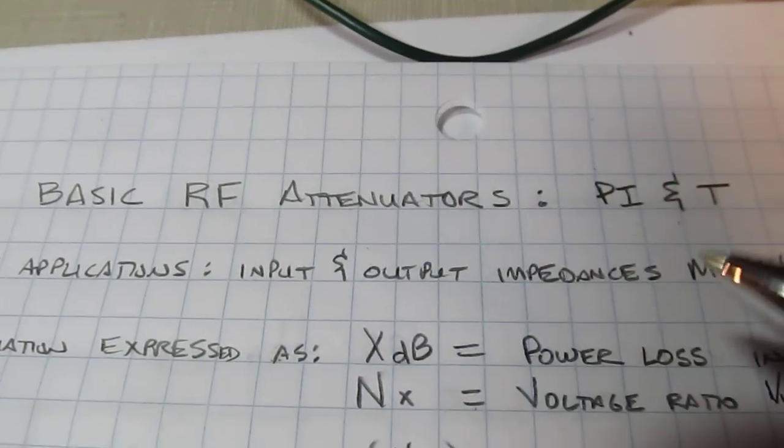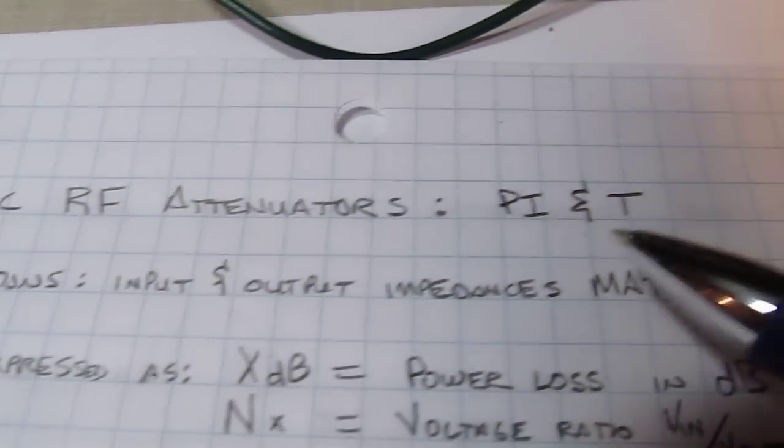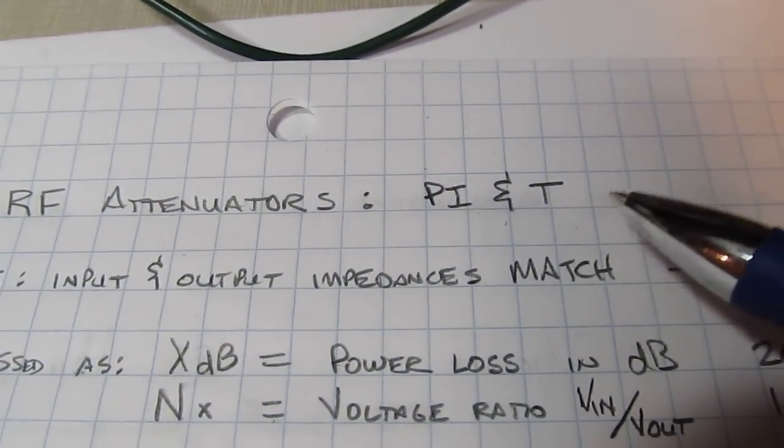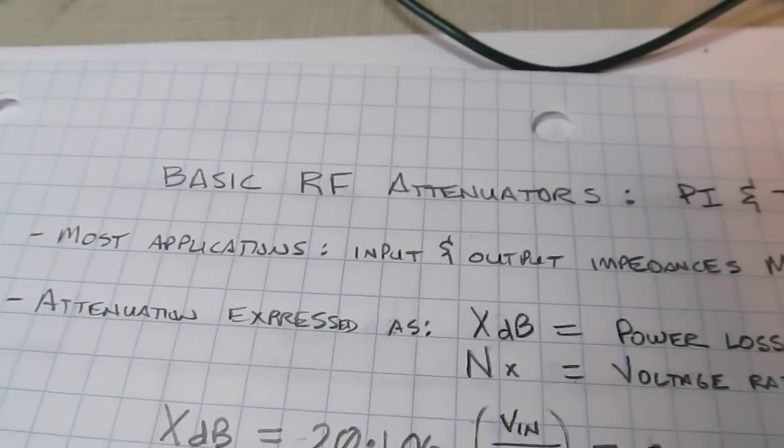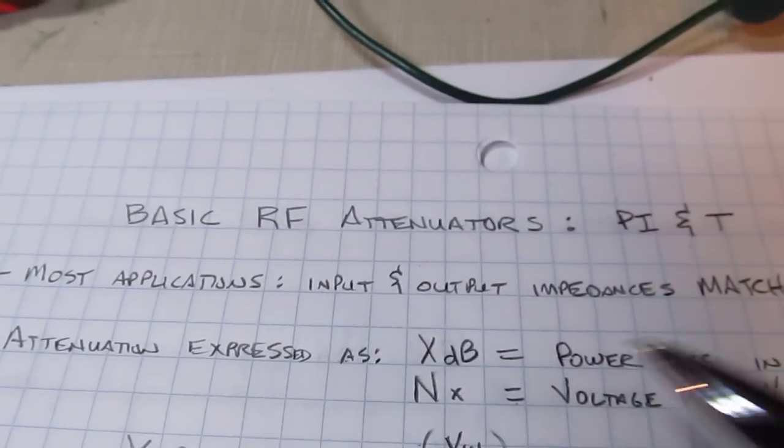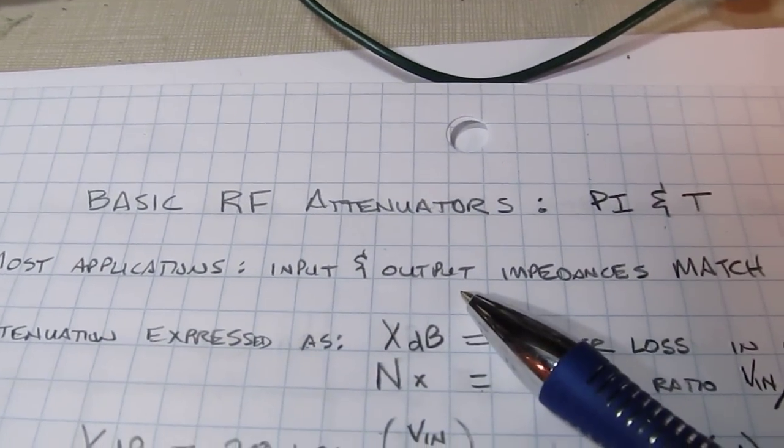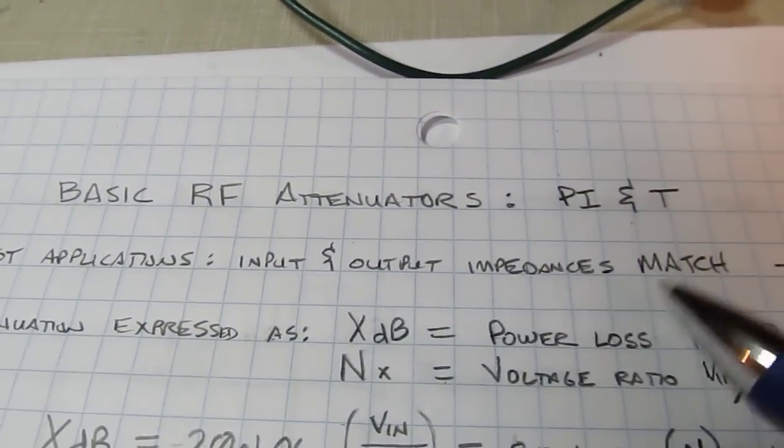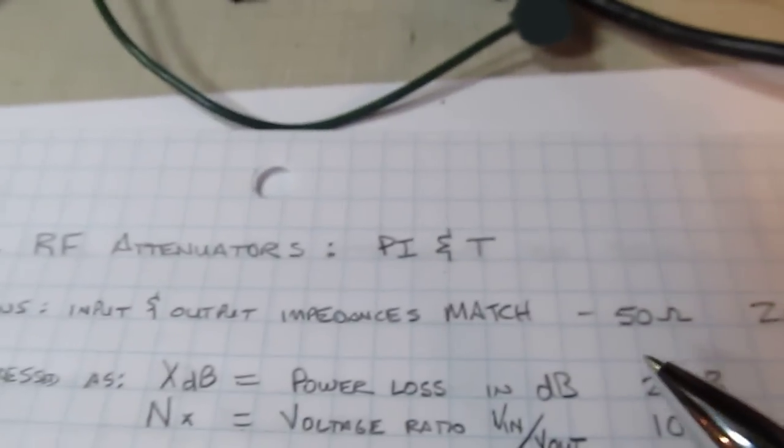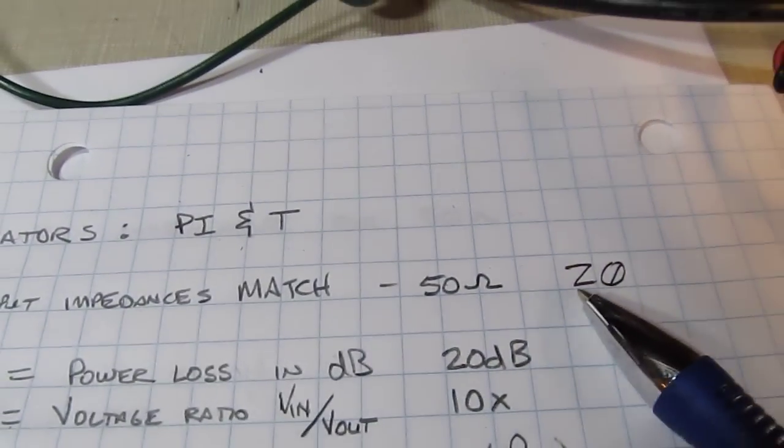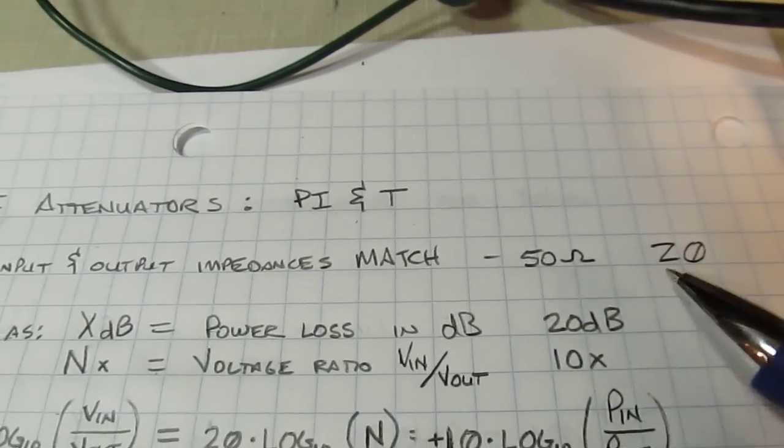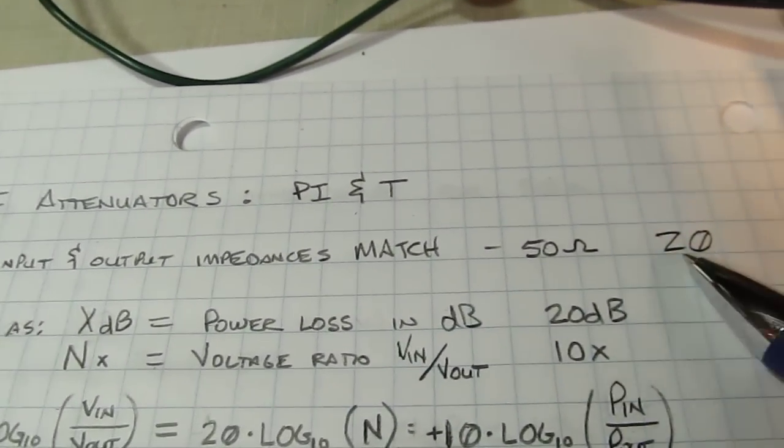I'm going to deal primarily with RF attenuators. There are two basic forms called a pi attenuator and a T attenuator. In most RF applications, the input and output impedance of the attenuator usually match, and they're usually 50 ohms. We'll call that characteristic impedance Z0, or zed zero for those outside the US.